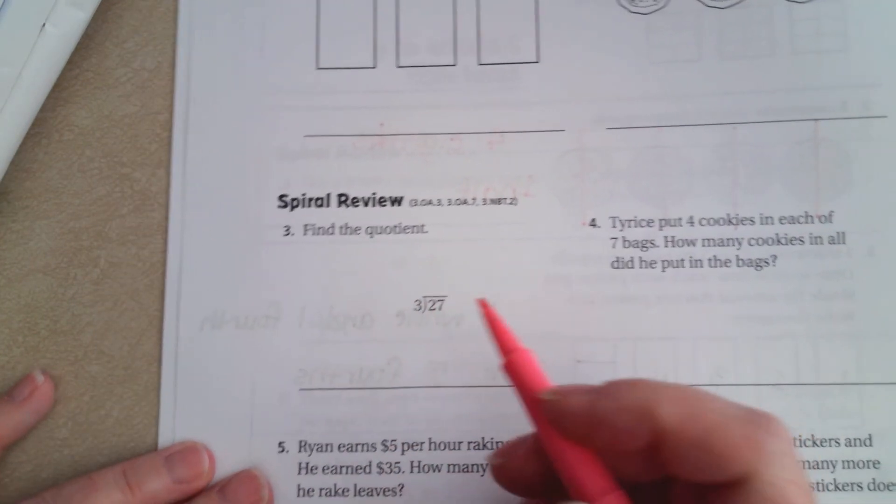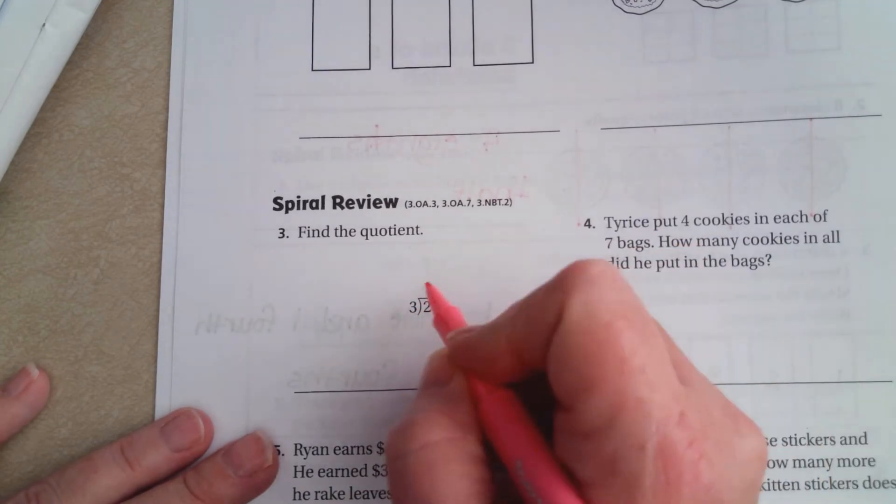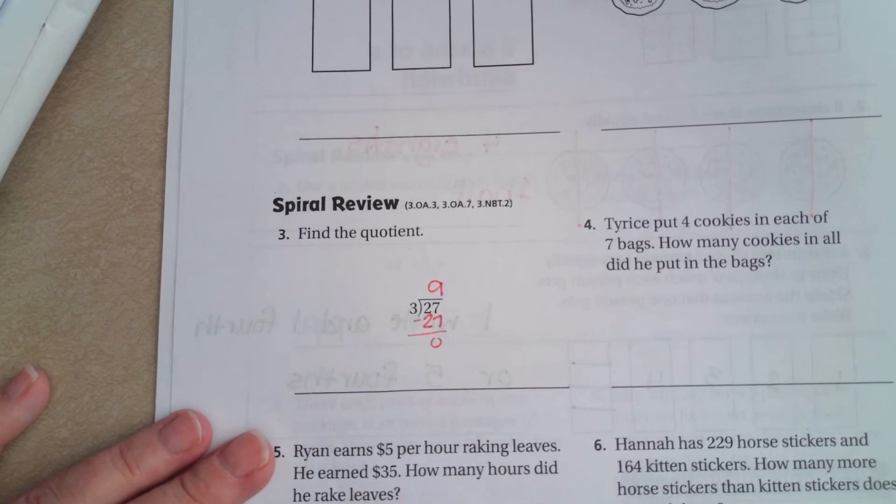We're going to find the quotient here. Well, 3 times what is 27? 3 times 9 is 27.